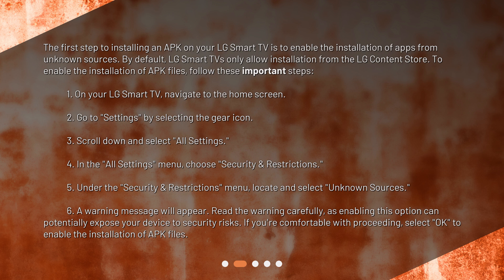In the All Settings menu, choose Security and Restrictions. Under the Security and Restrictions menu, locate and select Unknown Sources. A warning message will appear. Read the warning carefully, as enabling this option can potentially expose your device to security risks. If you're comfortable with proceeding, select OK to enable the installation of APK files.